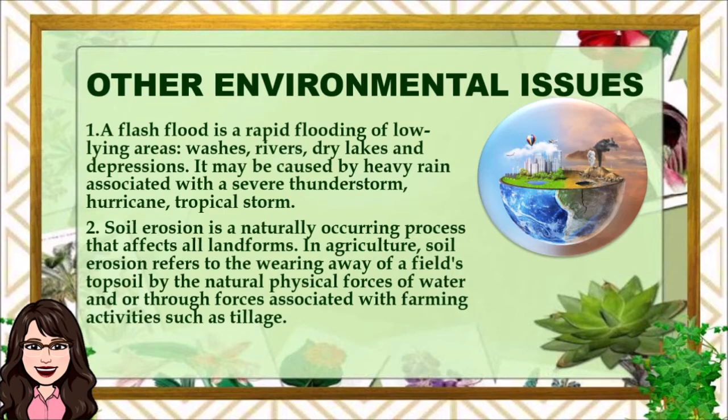Number two, soil erosion. It is a naturally occurring process that affects all landforms. In agriculture, soil erosion refers to the wearing away of a field's topsoil by the natural physical forces of water, or through forces associated with farming activities such as tillage.